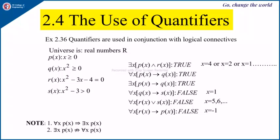Next, consider for all x: p(x) implies q(x). For the universal quantifier, if you replace x by any value and p(x) is true, then q(x) must also be true. Since x ≥ 0 implies x² ≥ 0 for every value of x, p(x) implies q(x) is true for all x. Therefore, 'for all x, p(x) implies q(x)' is true, and consequently 'there exists x, p(x) implies q(x)' is also true.